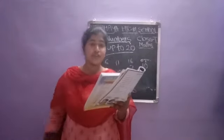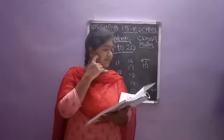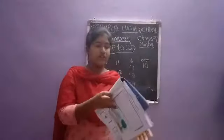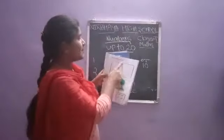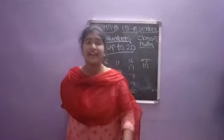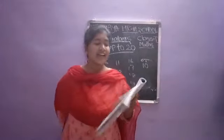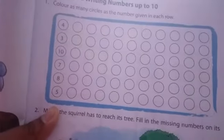Next, building numbers from 11 to 20. See here, children, page number 3. Reading and writing numbers up to 10. How should we write the numbers up to 10? Color as many circles as the number given in each row. In each row there is a number: 4, 3, 10, 7, 8, 5.